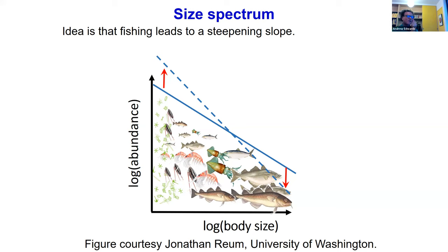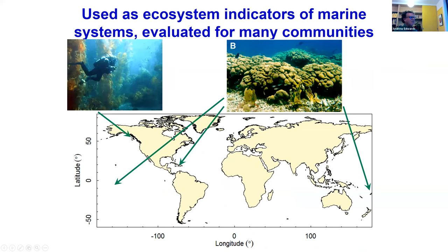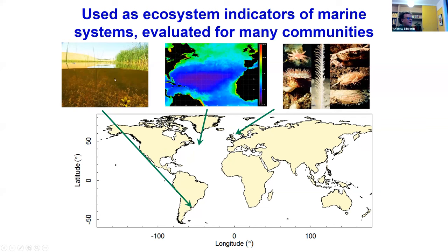I work in the marine world, so most examples are marine-focused, but these ideas can apply to terrestrial work as well. Size spectra have been used as ecosystem indicators for many marine systems — groundfish in the Bering Sea, the North Sea and Celtic Sea, kelp forests with rockfish populations in British Columbia, coral reefs in the South Pacific, the Bahamas and Fiji, macrophic communities in freshwater ponds in Uruguay, satellite data from the North Atlantic Ocean, and macroinvertebrates in the North Sea.